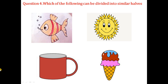Next question: which of the following can be divided into similar halves? There are some pictures. We have to divide these pictures into two halves by using a dotted line. This picture is divided into two similar halves. This is a sun — it is also divided into two similar halves. This is a cup — this can be divided into similar halves. This shape can also be divided into two similar halves.